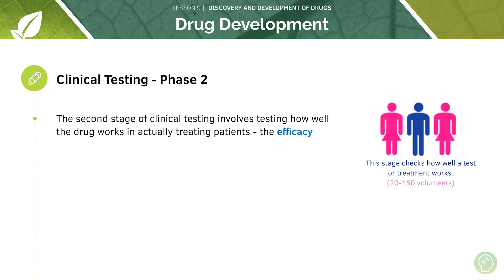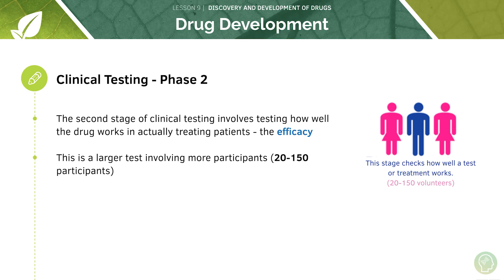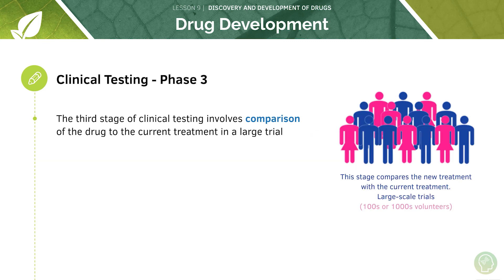Then we move on to phase two, which involves testing how well the drug works in actually treating patients — the efficacy. This is a larger test involving more participants, around 20 to 150. Finally, phase three involves comparison of the drug to the current treatment in a large trial, which can involve around 100 to thousands of participants. The more participants, the more reliable the results, because we're using a larger proportion of the population. We're comparing to existing treatments because we don't want to develop a drug that's only as efficient or less efficient than drugs already on the market — we want something better.